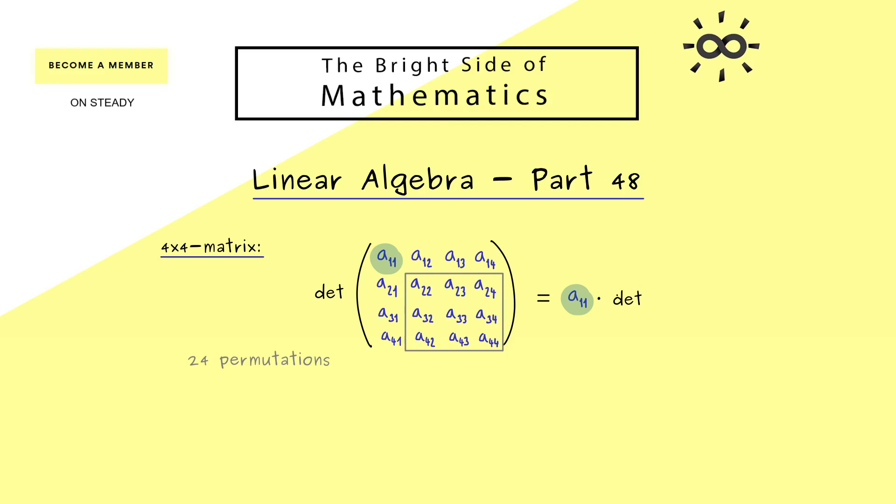In other words, we have our factor A11 times all possible combinations of this smaller matrix here. And of course, all possible combinations we can calculate with the determinant. And now you see, this is just the determinant of a 3x3 matrix and there we already know how to calculate it. Moreover, we also know, with this we now have covered 6 permutations of all the 24.